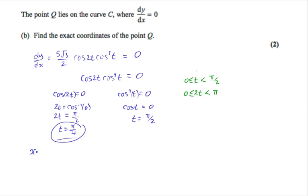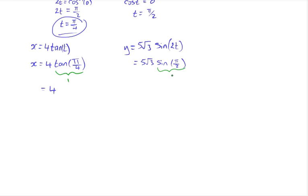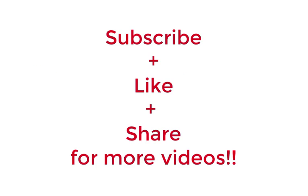We are already given that x equals 4 tan t and y equals 5 root 3 sin 2t. Substituting t equals pi over 4: x equals 4 tan(pi over 4). Tan of pi over 4 is 1, so 4 times 1 gives us 4. For y, substituting t equals pi over 4 gives 5 root 3 sin(pi over 2), because 2 times pi over 4 is pi over 2. Sin of pi over 2 is 1, so y equals 5 root 3. Therefore the coordinates of point Q are (4, 5 root 3).